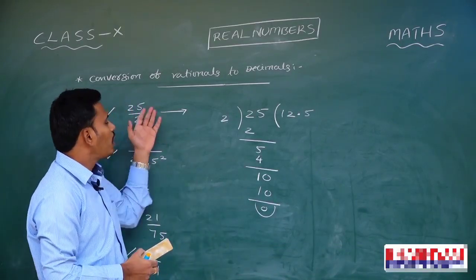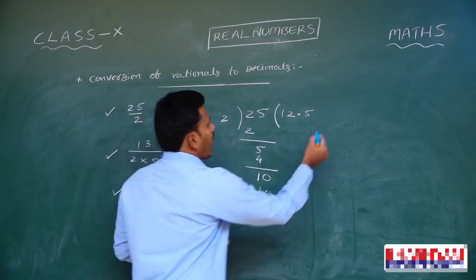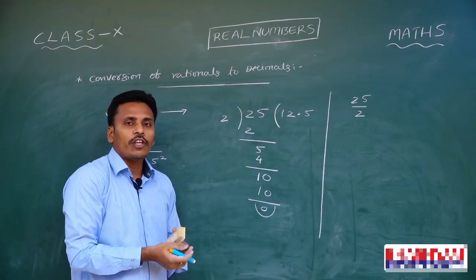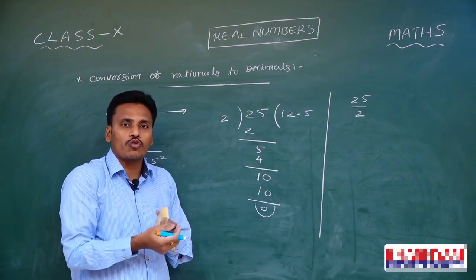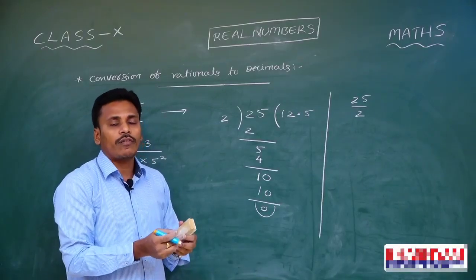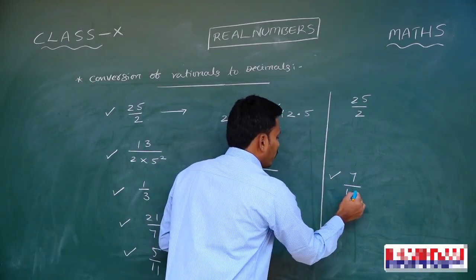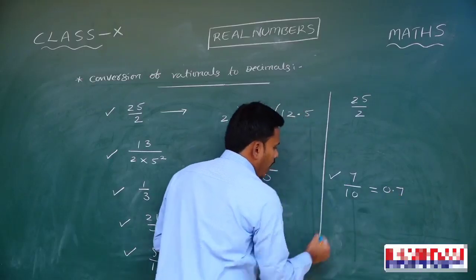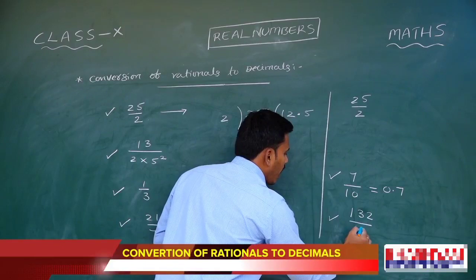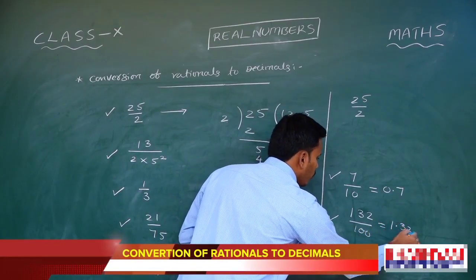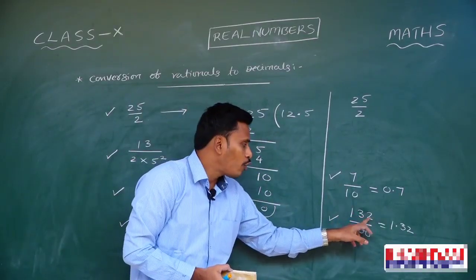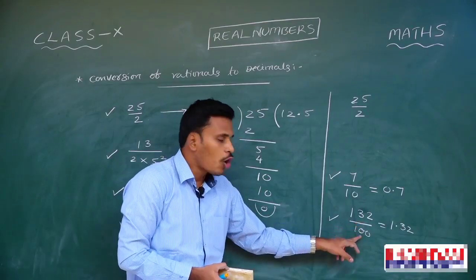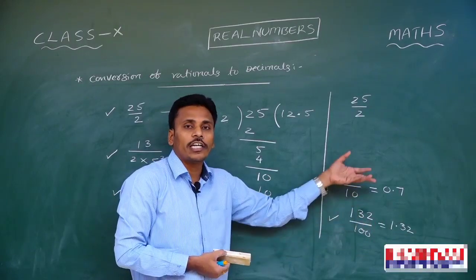Now let's see how to convert it into decimal without using the division process. We know that conversion between rationals and decimals is very easy if the denominators are powers of 10. For example, 7 by 10 is easily written as 0.7, and 132 divided by 100 is written as 1.32. We need to place the decimal point before as many digits as the power of 10 in the denominator. So if the denominator is a power of 10, it is easy to convert into decimal form.